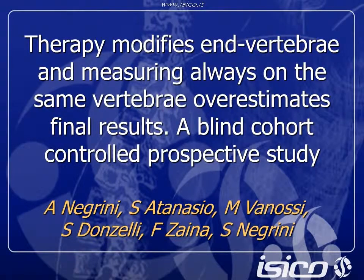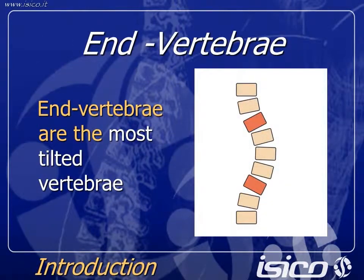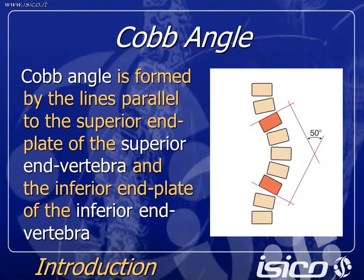Good morning. As you know, in a scoliotic curve, end vertebrae are the most tilted vertebrae. When you measure Cobb angle, you measure the angle formed by the lines parallel to the superior plate of the superior vertebra and the inferior plate of the inferior vertebra.